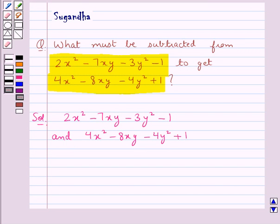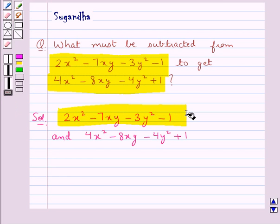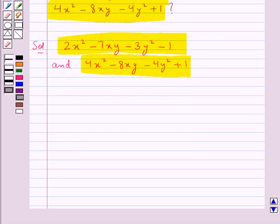We need to find the algebraic expression which must be subtracted from this given algebraic expression to get this algebraic expression. For this we subtract this expression from the first algebraic expression given to us.